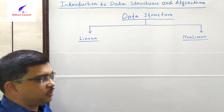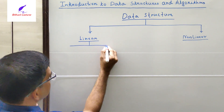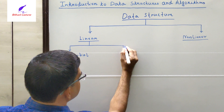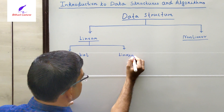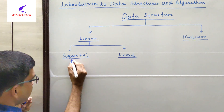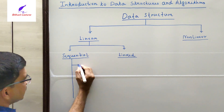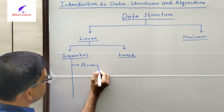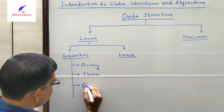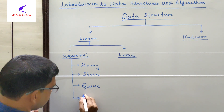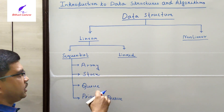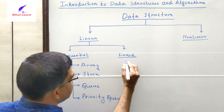Linear data structure can again be classified into two different categories: the first one is sequential, and the second one is linked. The sequential linear data structures are of four types mainly. The examples are: number one, array; number two, stack; number three, queue; and the last one is priority queue. These four are the linear sequential data structures.